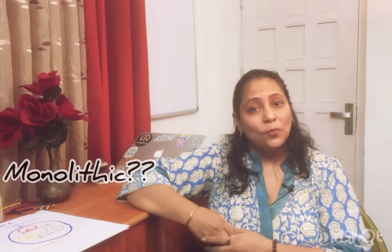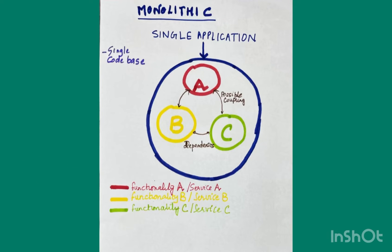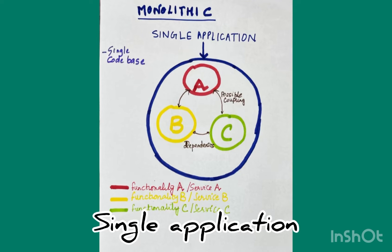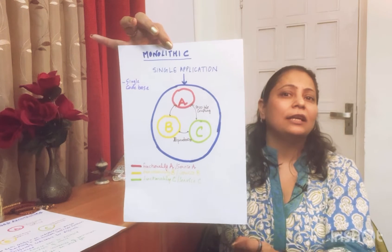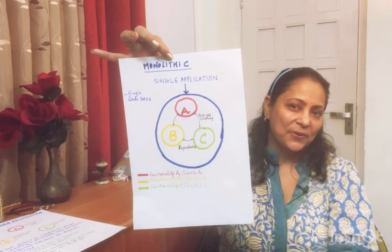To understand the beauty of service-based architecture, we first need to understand what monolithic architecture is. Monolithic architecture is the age-old architecture where we put all the business logic and all the requirements into a single application, and that single application is deployed to run. The advantage is that you have only a single application and a single code base.